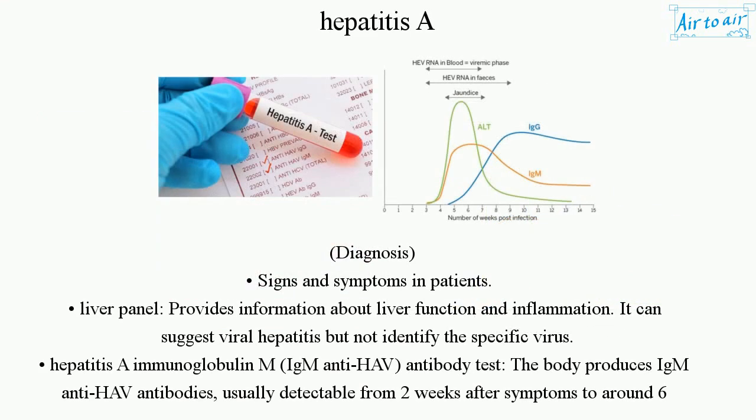Diagnosis is based on signs and symptoms in patients. A liver panel provides information about liver function and inflammation. It can suggest viral hepatitis but cannot identify the specific virus.